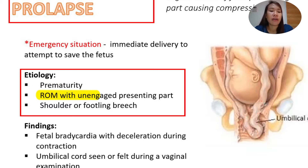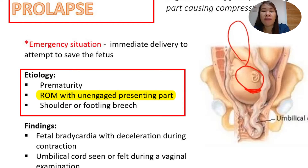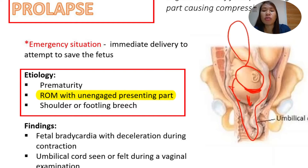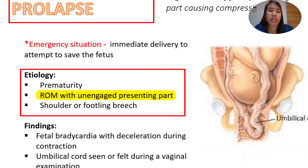Next is rupture of membranes with an unengaged presenting part. If the membranes rupture but the head is not yet engaged — meaning the head is still floating far from the lower uterine segment — there is a lot of space for the umbilical cord to prolapse. And once the membranes rupture, there is no longer a cushioning effect, so the pressure from the baby can compress the umbilical cord.